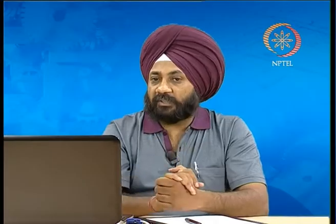Step one is pouring of the slip into the plaster of Paris mold. The capillary action of the porous mold draws the water, which is absorbed into the plaster of Paris mold, and a solid layer of ceramic product is formed on the inside of the mold walls. Next step: when the desired part thickness has been obtained, the excess slip is drained out. This process is sometimes analogous to the slush casting technique used in casting of metals — similarly, when we have achieved the desired thickness, the excess slip is drained out through the nozzle opening.